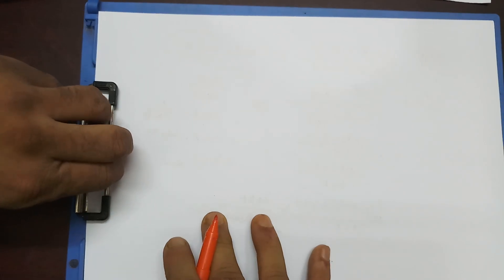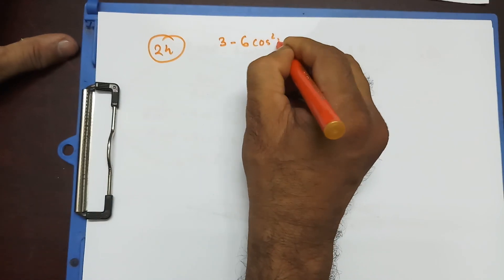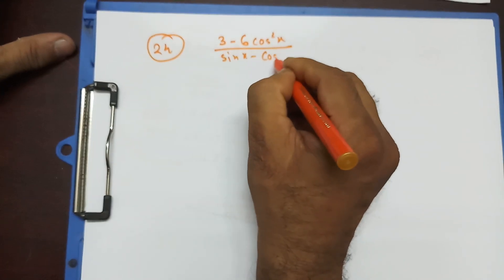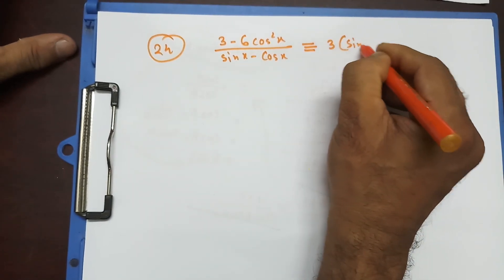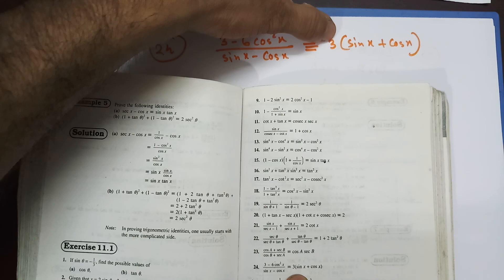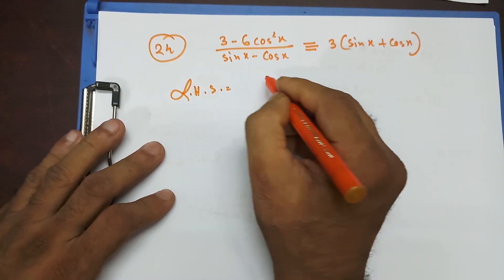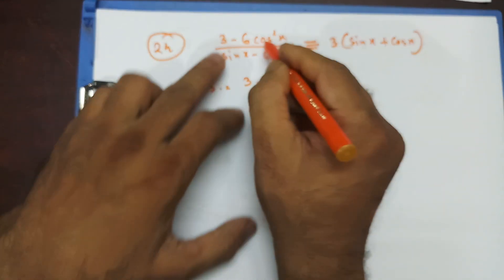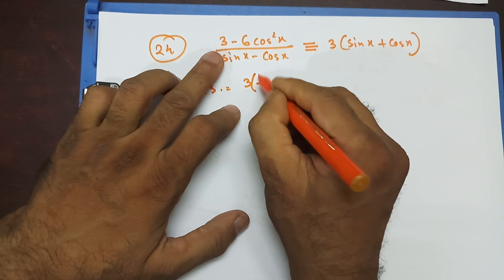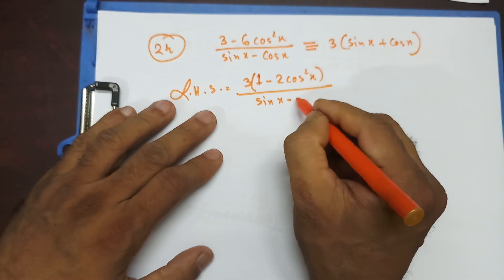Next is question 24. It says: (3 − 6cos²x) / (sin x − cos x) is identical to 3(sin x + cos x). Recheck — yes, that's copied correctly. For the left hand side, I can take 3 as a common factor, giving 3(1 − 2cos²x) / (sin x − cos x).